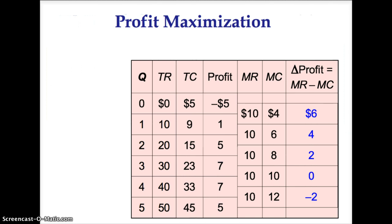At any quantity with marginal revenue greater than marginal cost, increasing quantity will raise the profits of the firm. At any quantity with marginal revenue less than marginal cost, reducing quantity will raise the profits of the firm. In this case, the firm will maximize profits by producing 4 units.